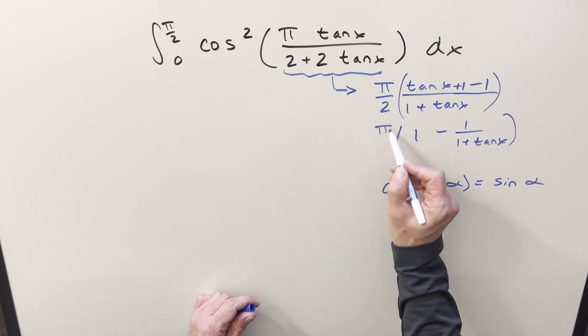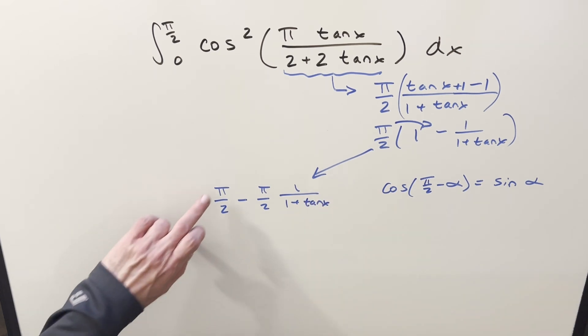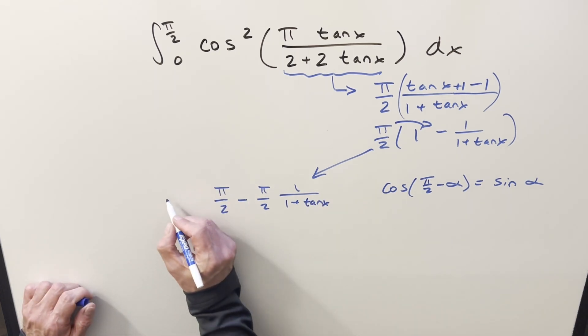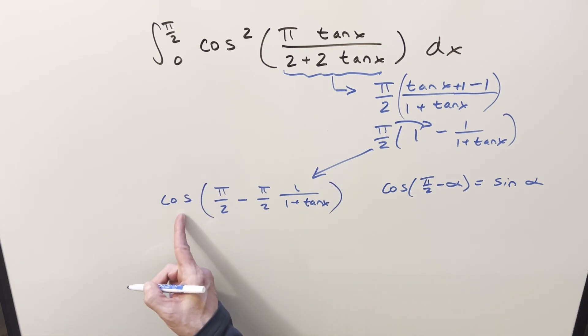I'll bring down this π/2. And then, if we distribute in the π/2 and come over this way, what's going to happen, we end up with π/2 minus π/2, 1 over 1 plus tan x. And then, getting back to what we're doing, this whole thing is inside a cosine. So I'm not worried about the squared yet. Let's just look at what happens with cosine.